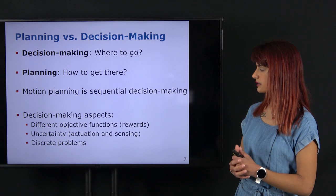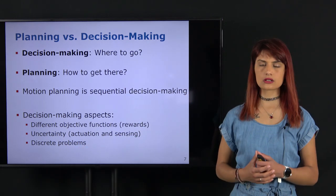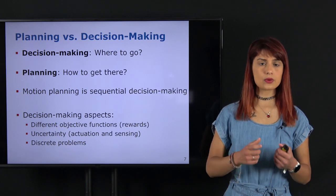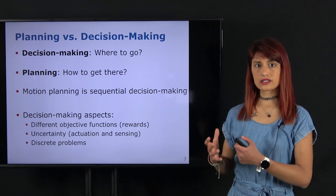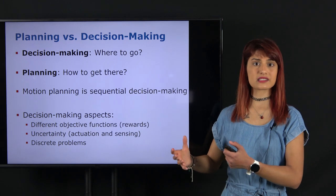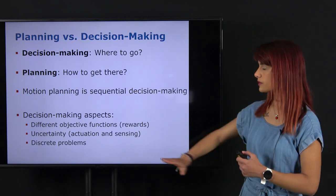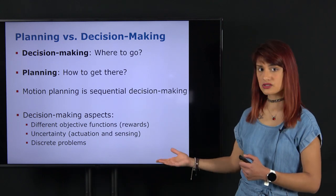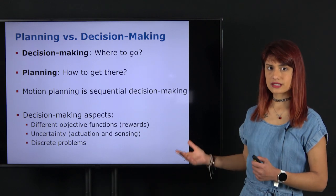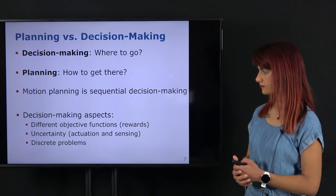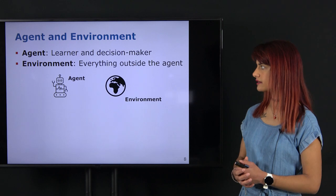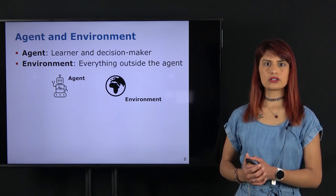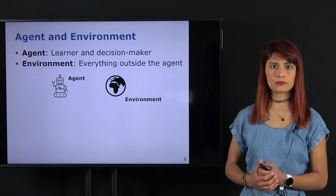Finally, to make it clear: when we talk about decision-making here we refer to discrete problems. This is similar to planning, where we converted the continuous configuration space into a discrete representation to apply search-based methods. Decision-making also deals specifically with discrete states and a discrete set of actions the robot can take. With these differences from planning understood, we can move on to define some key terms for the decision-making problem that we will keep returning to throughout this module.